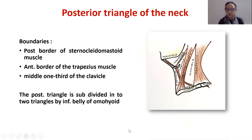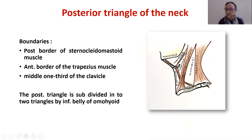The posterior triangle of the neck has the boundaries of the posterior border of the sternomastoid muscle, the anterior border of the trapezius muscle, and the middle one third of the clavicle. This triangle is subdivided into two triangles by the inferior belly of the omohyoid: the occipital triangle and the supraclavicular triangle.